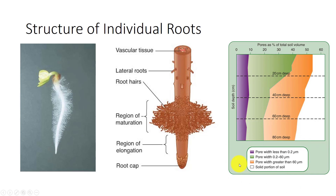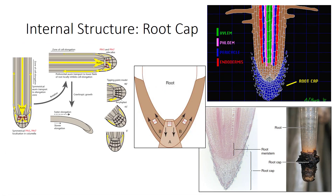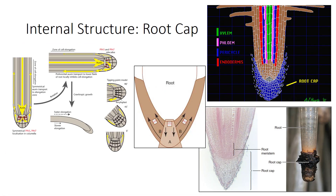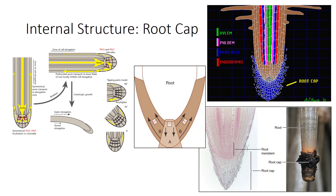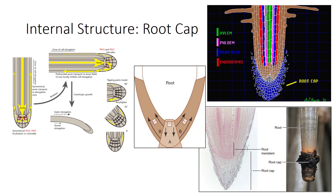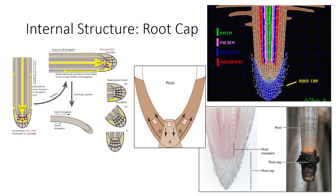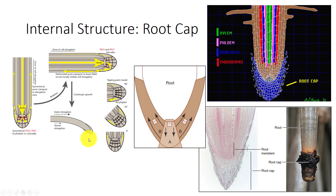Root hairs, being only 10 micrometers in diameter, can enter most crevices and extract water and minerals from them. Behind the root hair zone are lateral roots, which may occur in rows or appear to be randomly distributed on the parent root. Whereas the shoot apical meristem is protected by either bud scales or young, unexpanded foliage leaves, the root apical meristem is protected by a thick layer of cells called the root cap.